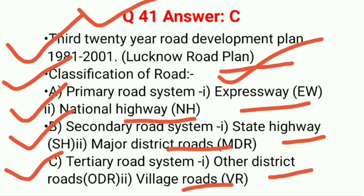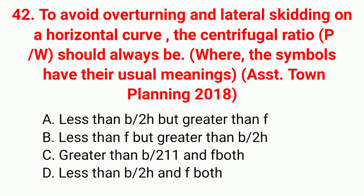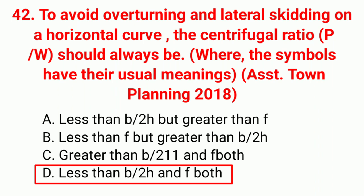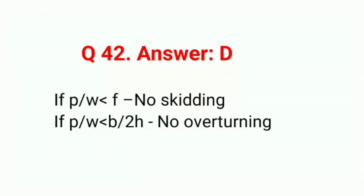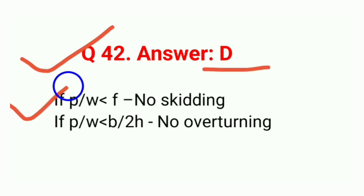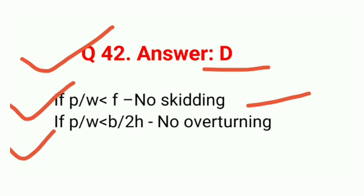Question 42: To avoid overturning and lateral skidding on a horizontal curve, the centrifugal ratio P/W should always be — correct answer D: less than both B/2H and f. If P/W < f, there is no skidding; if P/W < B/2H, there is no overturning. Answer is D.